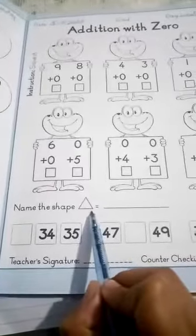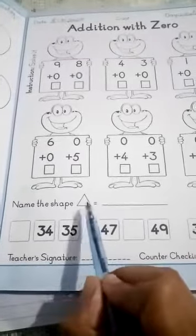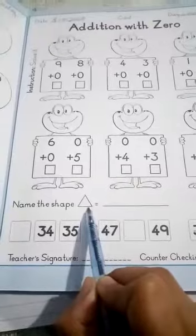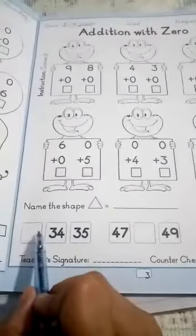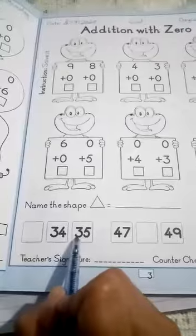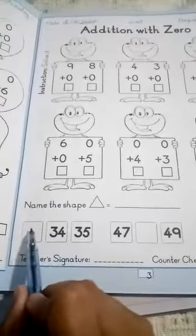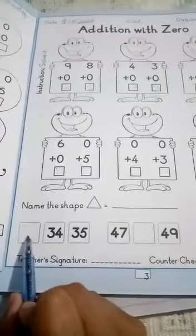We have which shape? Triangle. This is which shape? Triangle. Okay, words come before: 34, 35. What comes before 34? You have to write that.